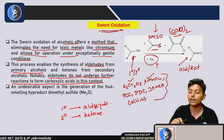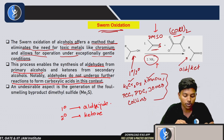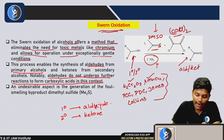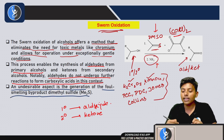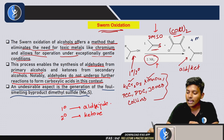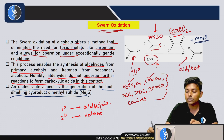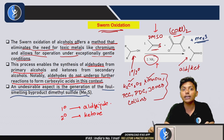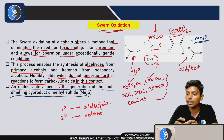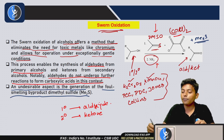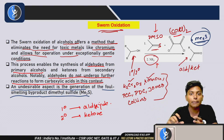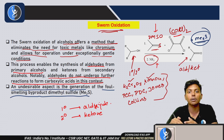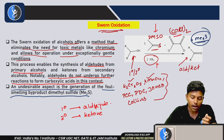An undesirable aspect of Swern Oxidation is the generation of a foul-smelling by-product, dimethyl sulfide (Me₂S). This is also a characteristic feature of the reaction — if we detect the foul smell of Me₂S, that means the reaction has completed.